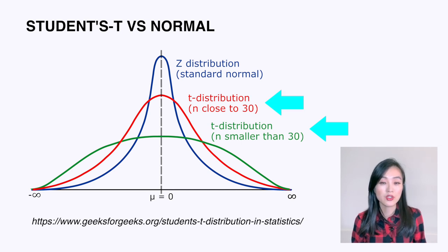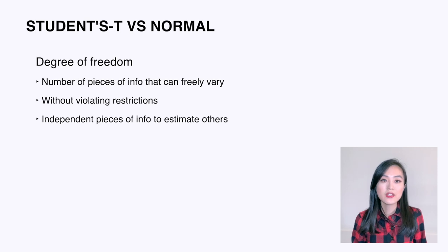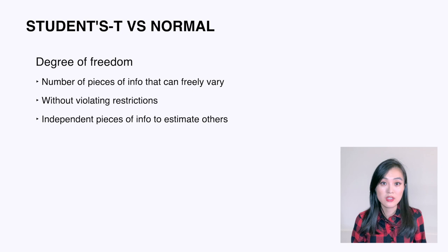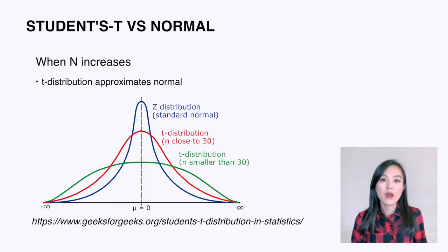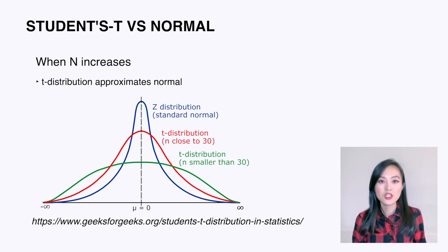This is related to another concept: degrees of freedom. It is the number of pieces of information that can freely vary without violating any given restrictions — that is, the number of independent pieces of information available to estimate another piece of information. For example, if we have n data points there will be n minus 1 independent values after we know the mean. We can see that as n increases, the t-distribution better approximates the normal distribution.